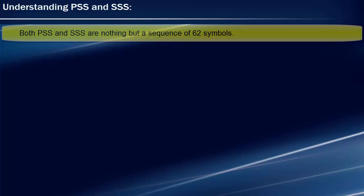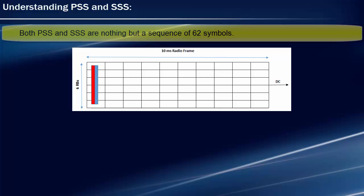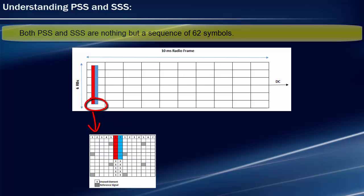Both PSS and SSS are sequences of 62 symbols. PSS and SSS are transmitted only on the central 72 resource elements of the entire system bandwidth. These 62 symbols are mapped only to the central 62 resource elements, and five resource elements are left unused at both extremities. The reason for keeping five resource elements unused is twofold: first, this scheme enables UE to detect PSS and SSS using a 64-point FFT, since after 64 the next FFT size is 128; and second, it leads to a lower sampling rate than would have been necessary if all 72 subcarriers were used in the central six resource blocks.